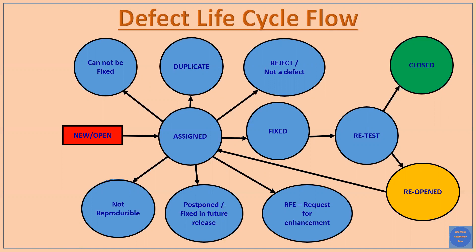After that, the tester assigns the bug to the developer. When the tester assigns the bug to the developer, the defect comes under the state of 'Assigned'. Now it is the role of the developer to work on the defect. When the developer works on the bug and fixes it, the stage of the defect comes to the 'Fixed' state.